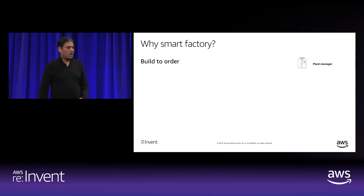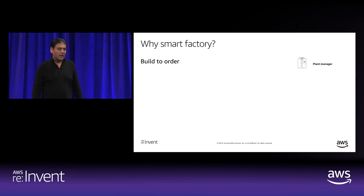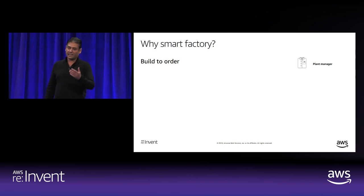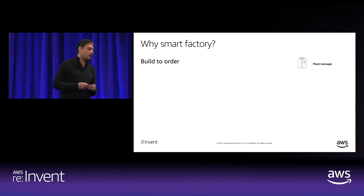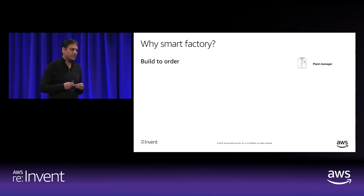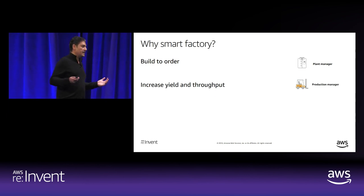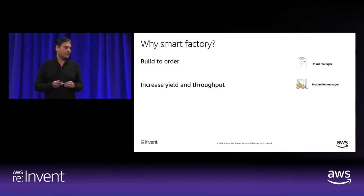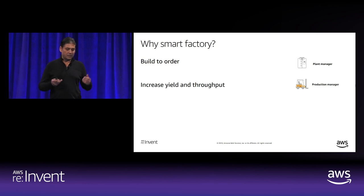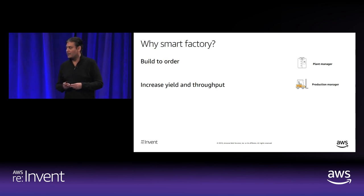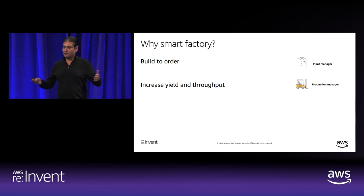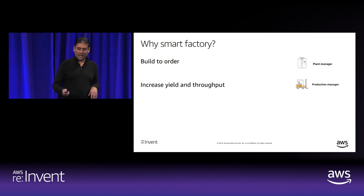Getting one level deeper, for plant managers with smart factory — perfect information exchange and control means you can do build-to-order, even for mass manufacturing. For production managers, we are going to increase yield and throughput. Yield is the good parts coming out of an assembly line divided by total parts; throughput is parts per time period. To increase these, we have to reduce downtime of machines and reduce part shortages.